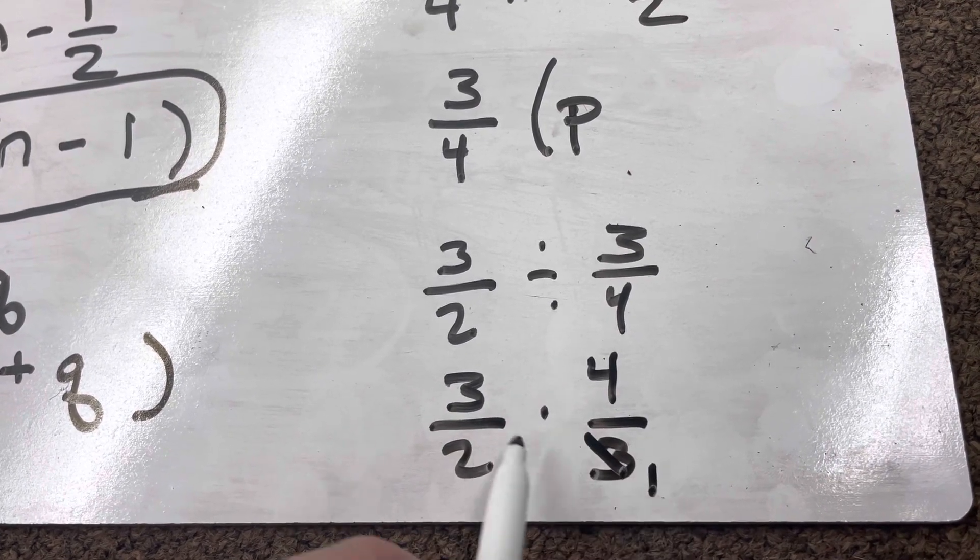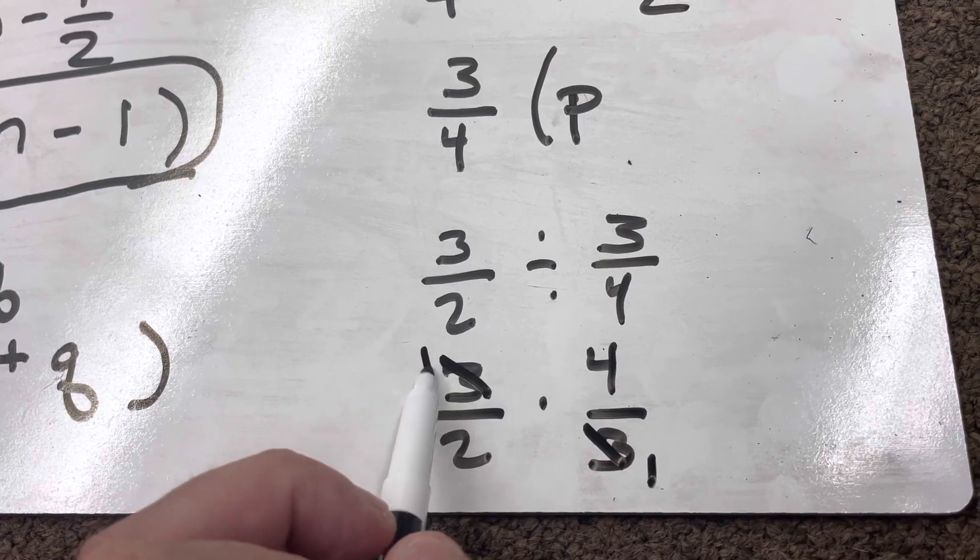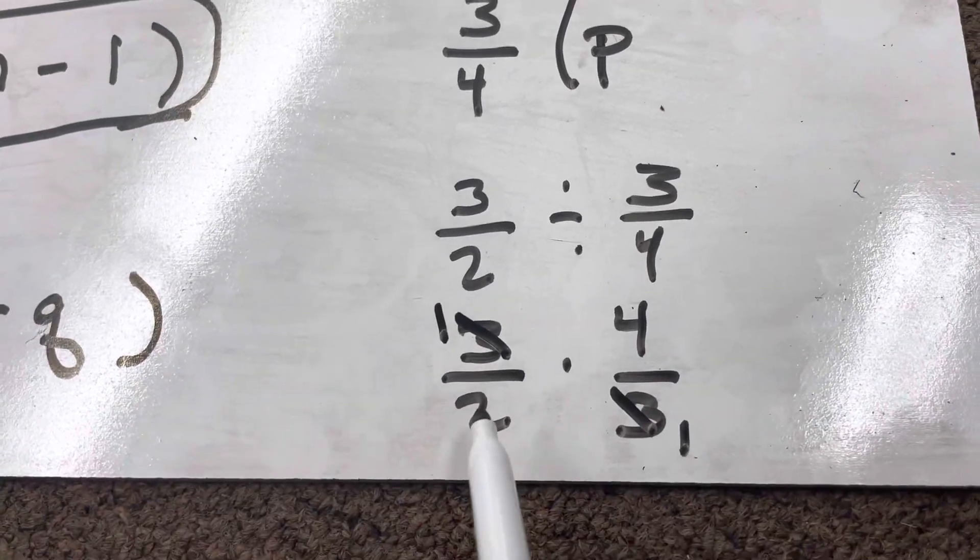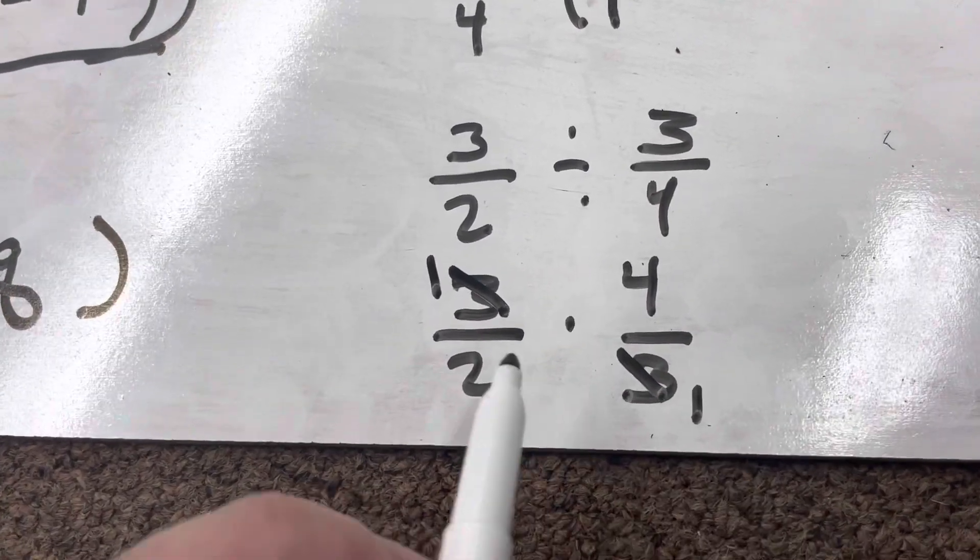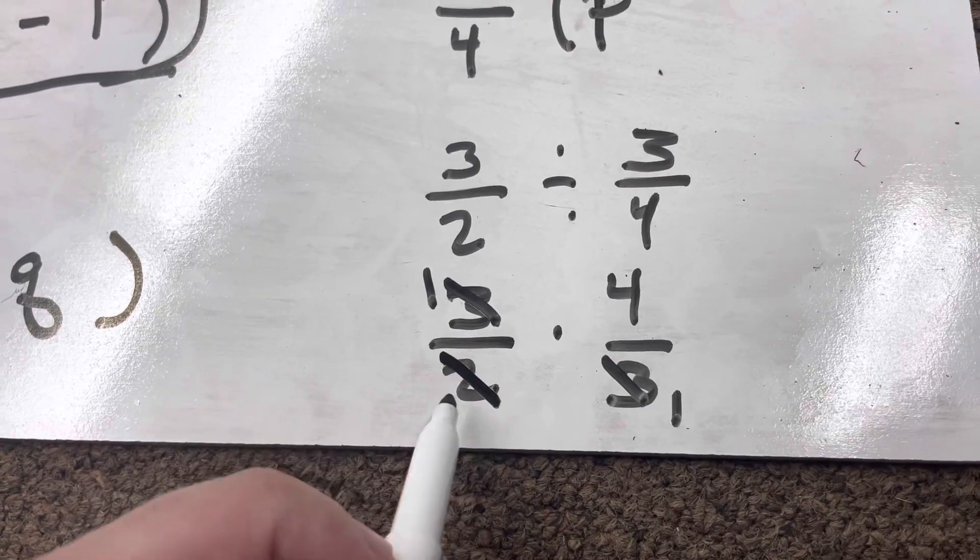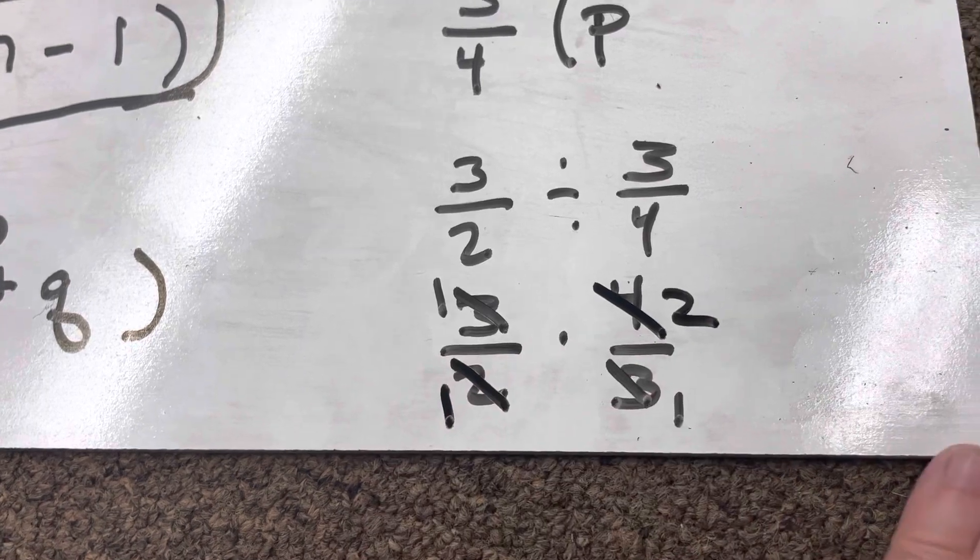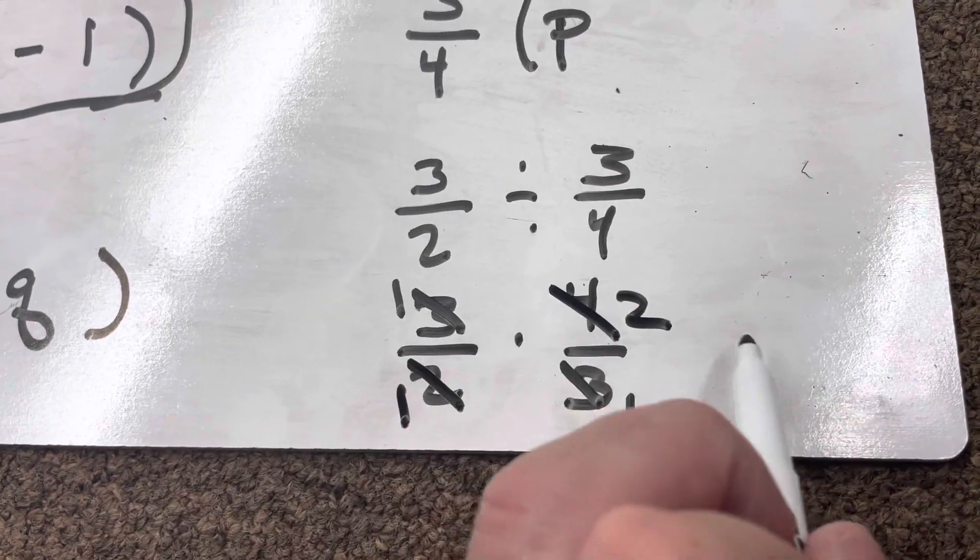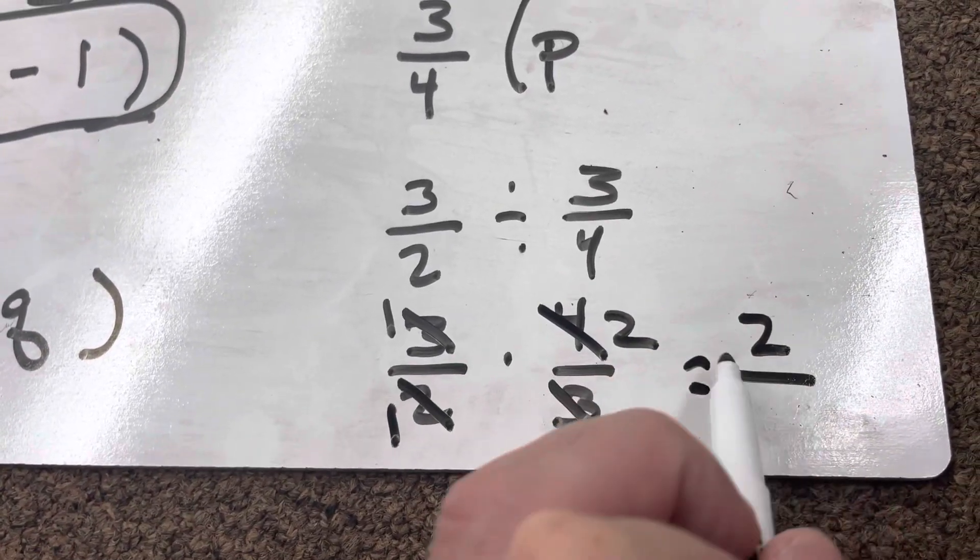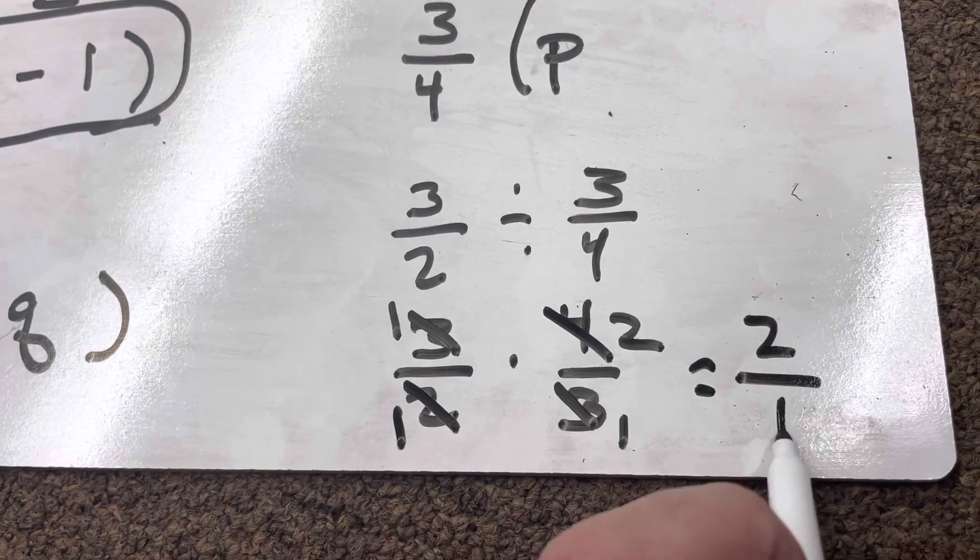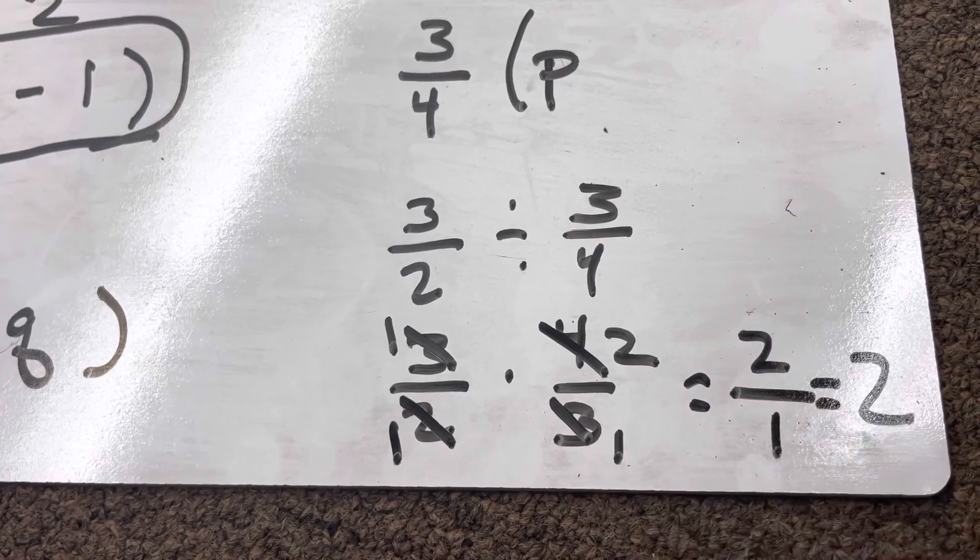Well, I can cross-check the 3s, divide them both by 3, so they become 1. 2 and 4 can be cross-checked with a 2. 2 divided by 2 is 1. 4 divided by 2 is 2. 1 times 2 equals 2. 1 times 1 equals 1. 2 over 1 equals 2.